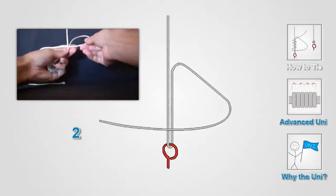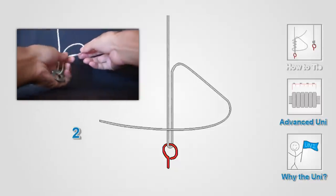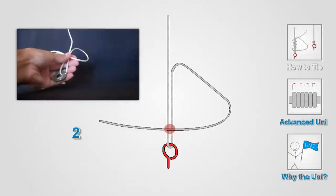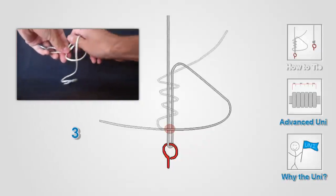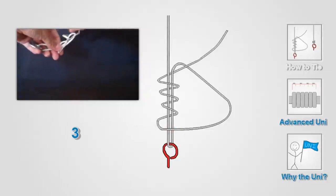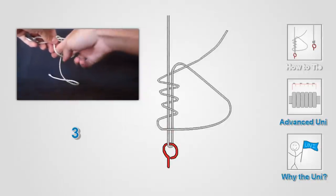At this point, with one hand, pinch both strands and the crossing strand. Next, start wrapping the tag end around both strands of line and through the loop using your free hand.